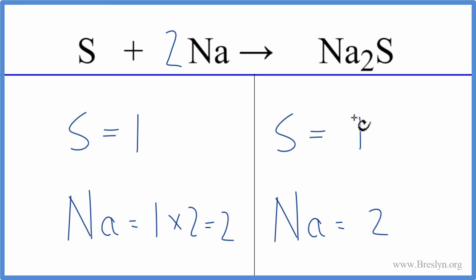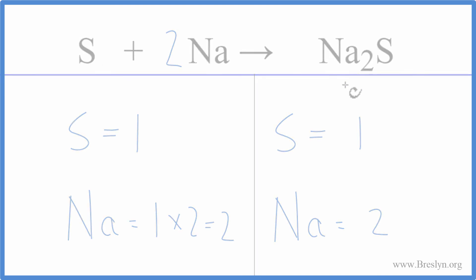We have one sulfur on each side. We have two sodiums on each side. We're done. This is Dr. B with the balanced equation for sulfur plus sodium that gives us sodium sulfide. Thanks for watching.